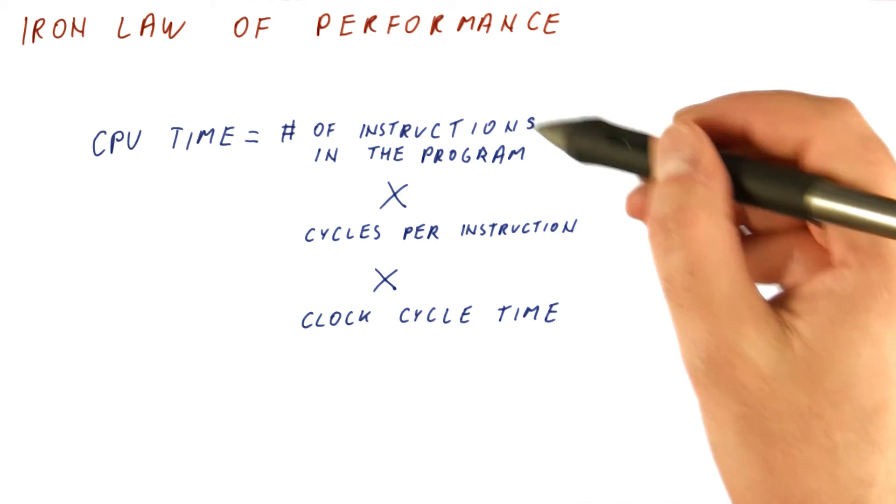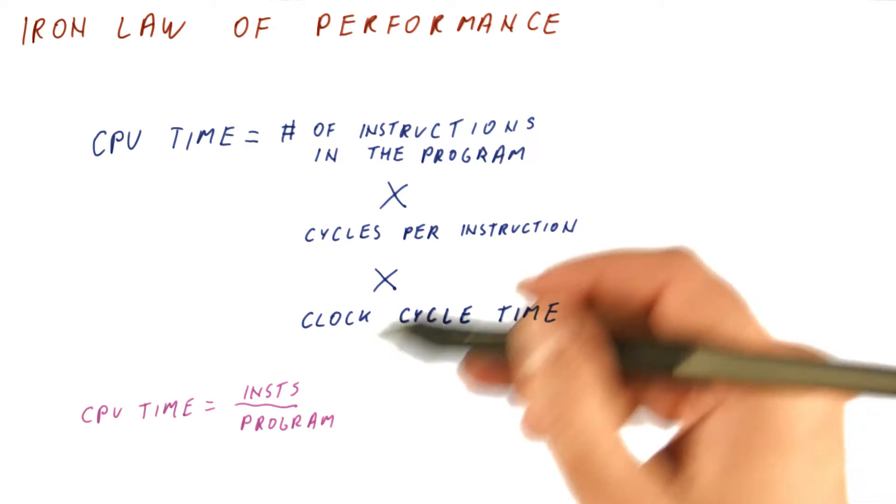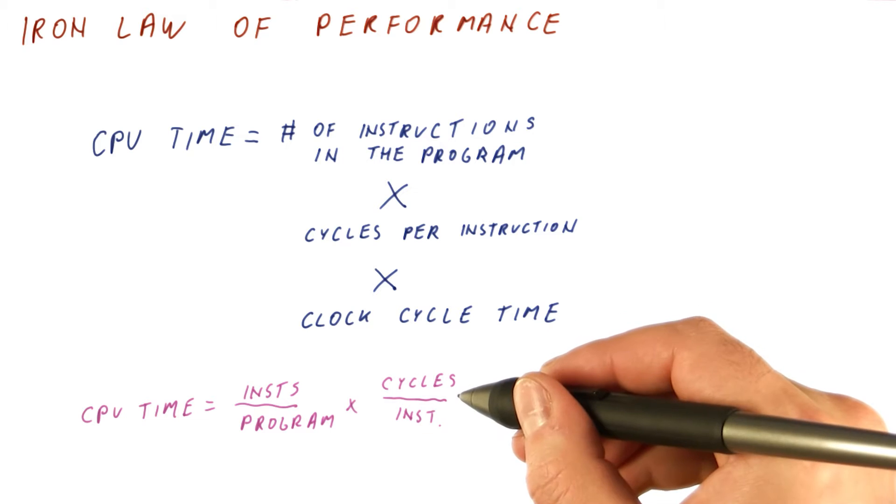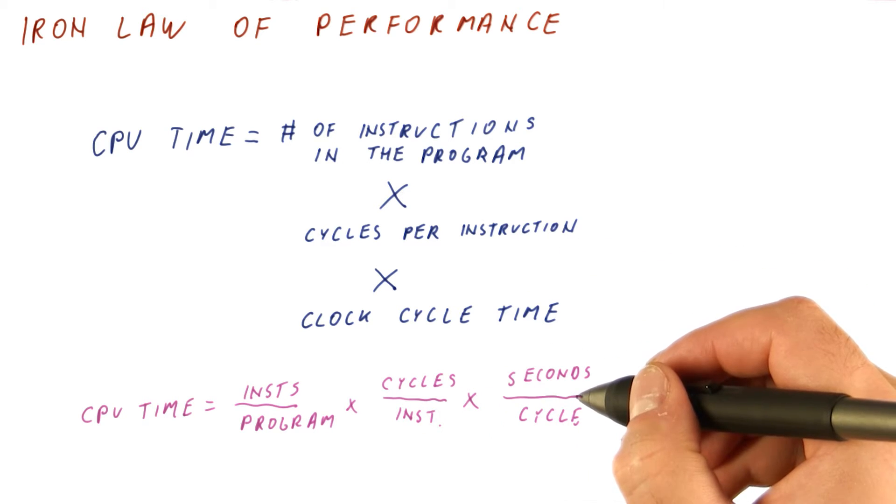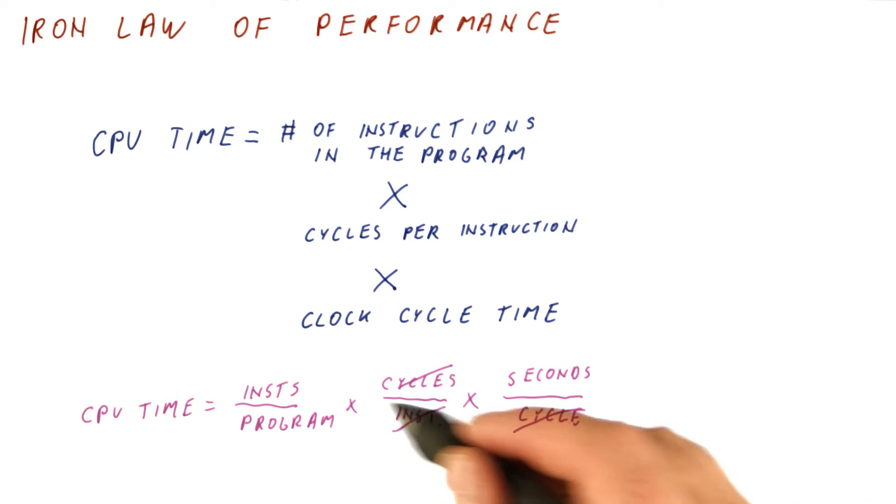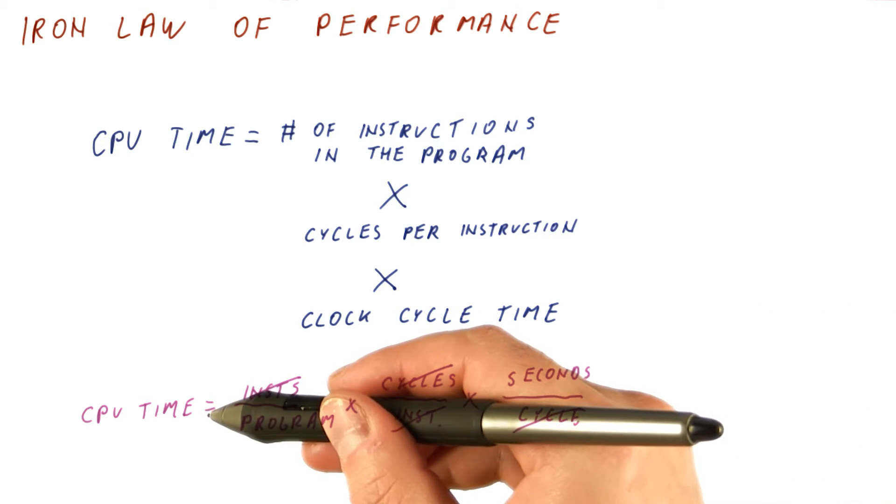To understand why this is CPU time, we can do the following. The number of instructions per program times the cycles per instruction times number of seconds we spend per cycle. And then the cycle here, we can cross them out. The instruction here, we can cross them out, and we get how many seconds per program, which is the CPU time.